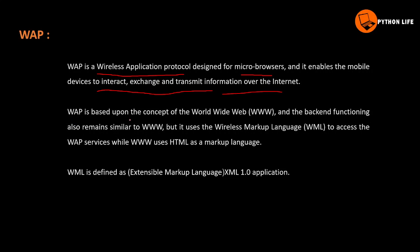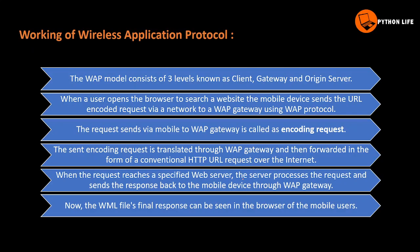WAP is based upon the concept of the World Wide Web, and its back-end functioning remains similar to WWW. The key difference is that WAP uses Wireless Markup Language (WML), while the web uses HyperText Markup Language (HTML). WML is an XML 1.0 application used to define content for wireless devices.